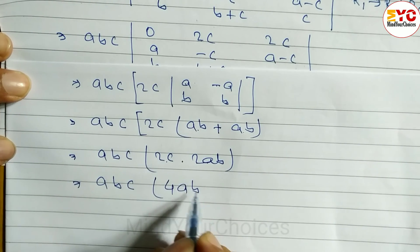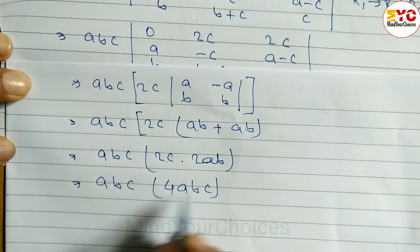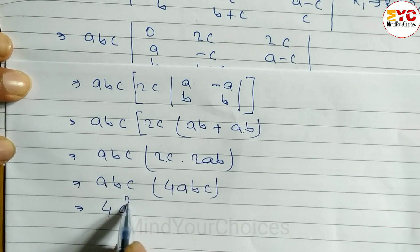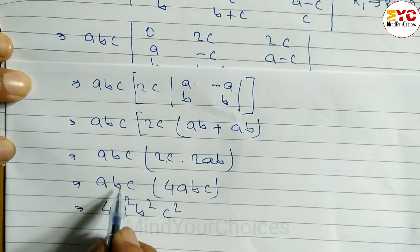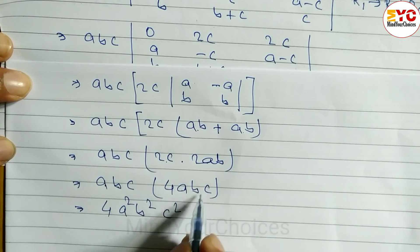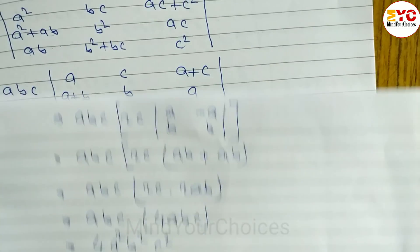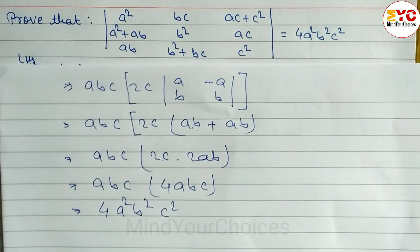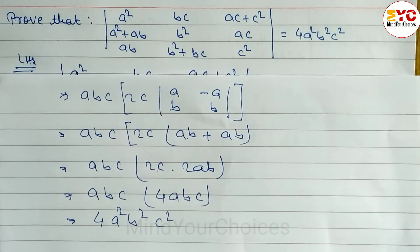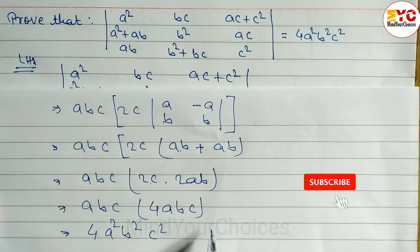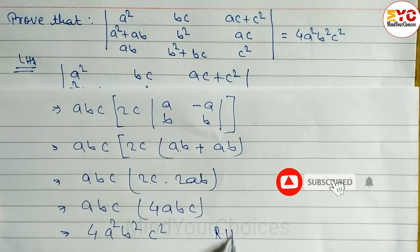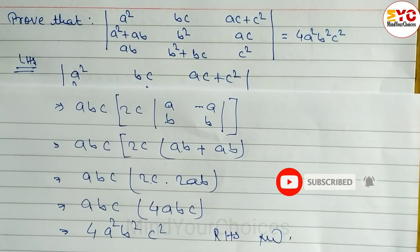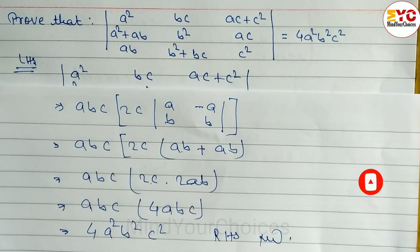Now multiplying: abc × 2c × 2ab = abc × 4abc = 4a²b²c². So a×a = a², b×b = b², c×c = c², giving us 4a²b²c², which is the RHS. Hence proved. If you understood this video, please hit the like button and share with your friends.